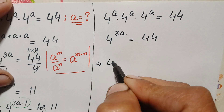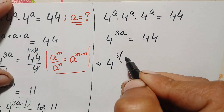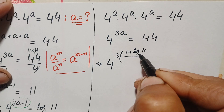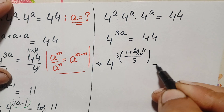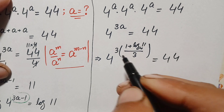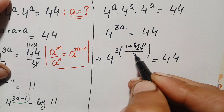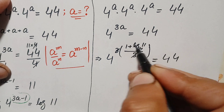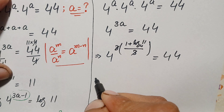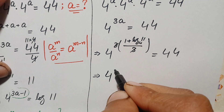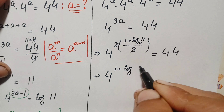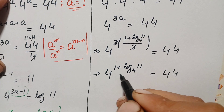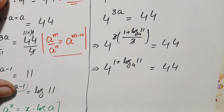Substituting, the left hand side becomes 4 raised to power 3 times (1 + log₄(11)) / 3. The 3s cancel, leaving 4 raised to power (1 + log₄(11)) equals 44. Using the exponential identity a^(m+n) = a^m times a^n, this becomes 4^1 times 4^(log₄(11)) equals 44.